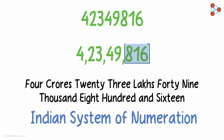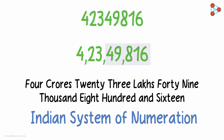Leave 3 digits from the right, then 2 digits, and then 2 digits again — 3, 2, 2 and so on. Thousands, lakhs, and crores.